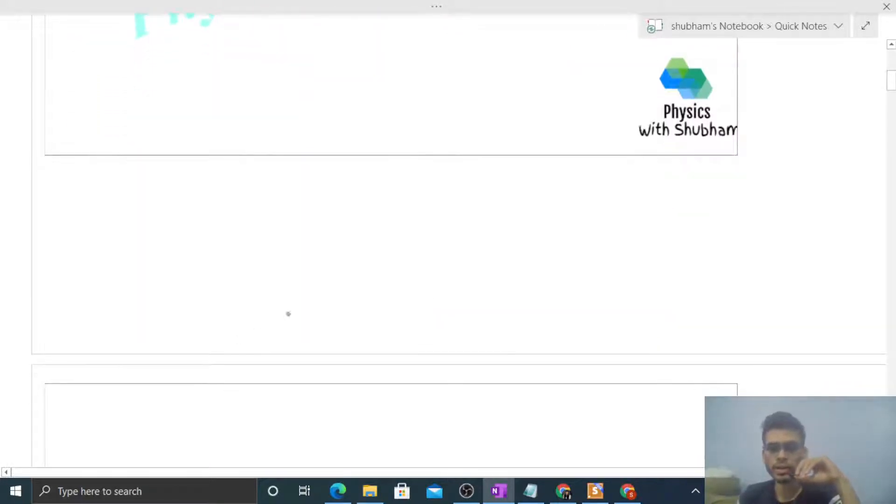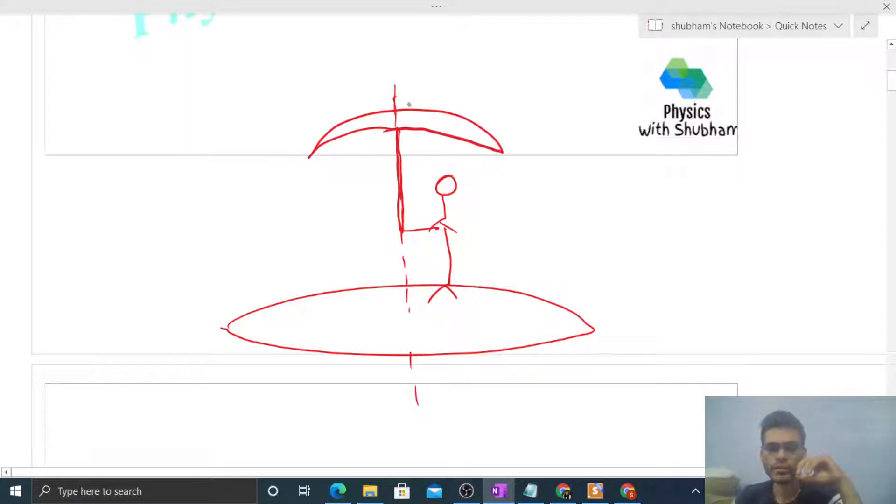Let me draw the diagram first. There's a platform free to rotate about its axis. This is the axis of the platform. There is a boy standing on the platform holding an umbrella in his hand such that the axis of the umbrella coincides with the axis of the platform. Now let me define my system. I am taking my system as this umbrella, this boy, plus this platform. This is my system.